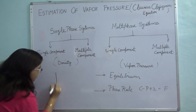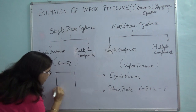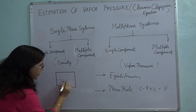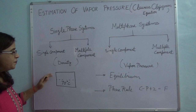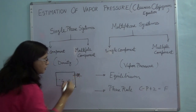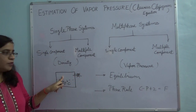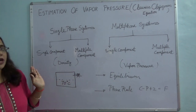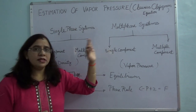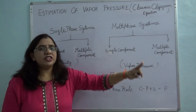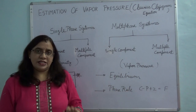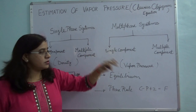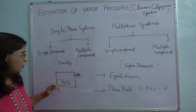Let's take a very simple example. Let's say I take water in a container at 70 degrees centigrade. I have evacuated this container, meaning I have removed all the air. If I keep the air inside then it becomes a multi component system. So right now I am just interested in single component. In this video we will focus on single component system and try to determine its vapor pressure.